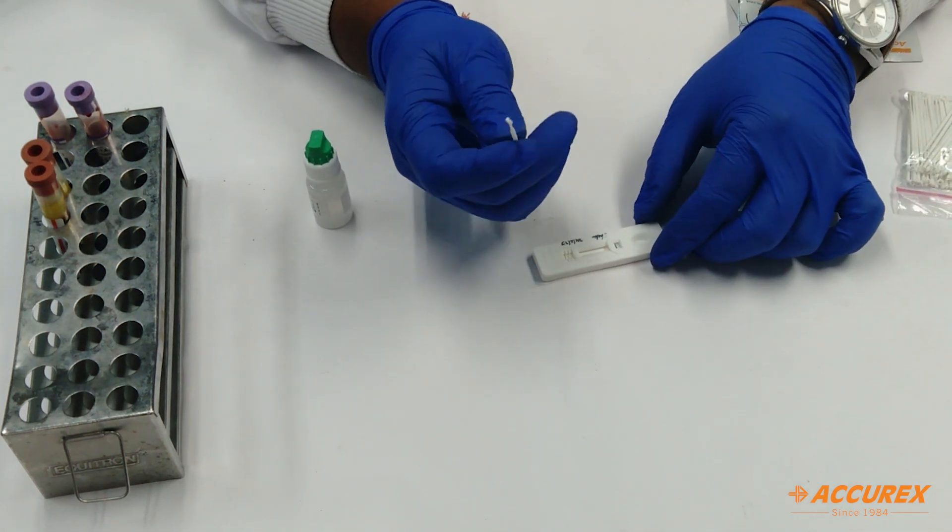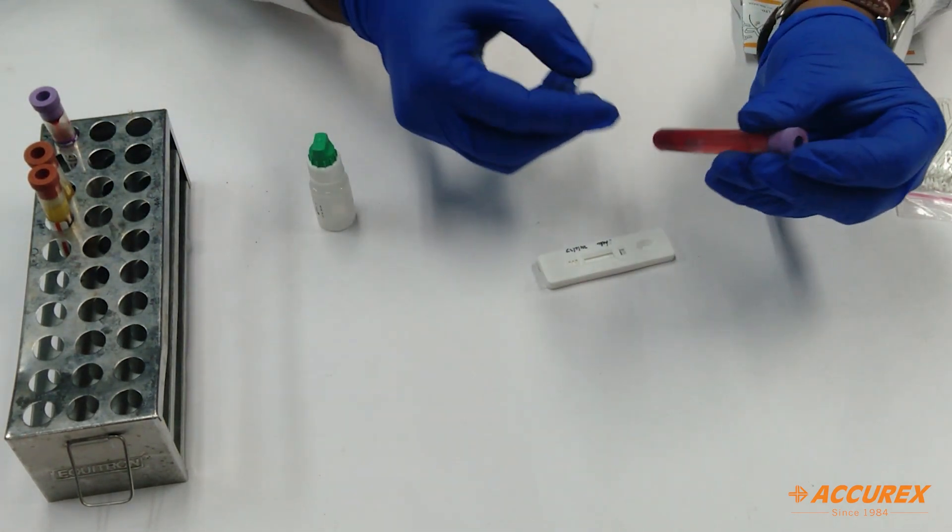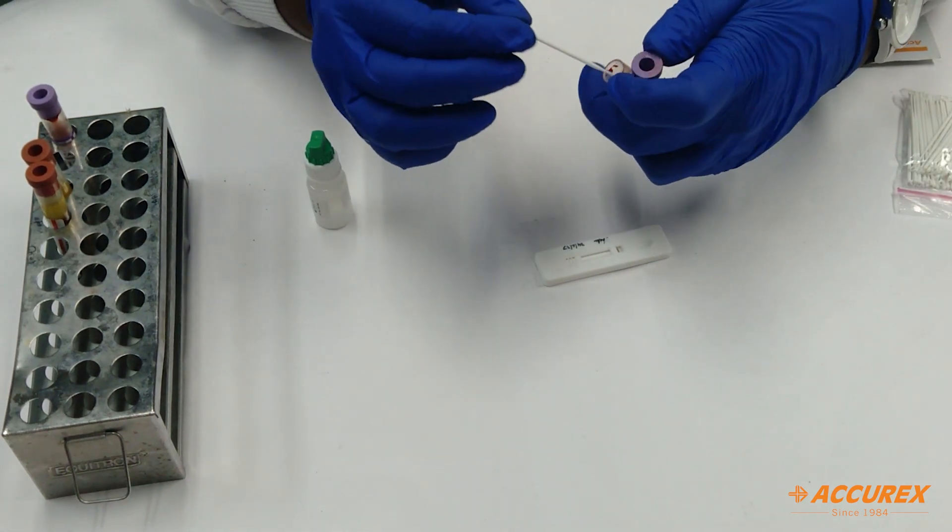You will get the dropper with which you can collect the sample. So I already collected a sample in the EDTA tube. Just we need to take 5 microliter sample from the tube.